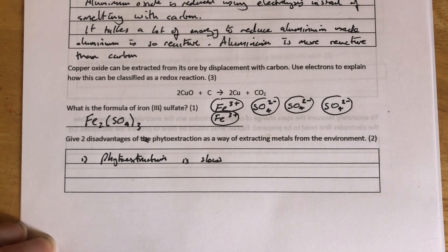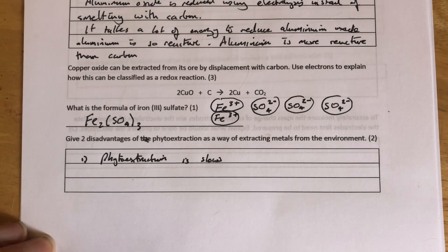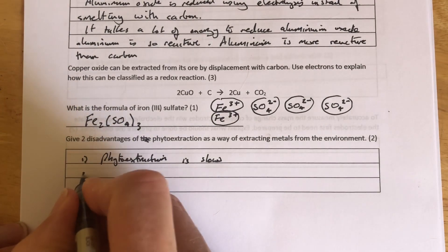So it's much quicker just to go to a quarry and dig the metal ore out of the ground and then extract it. You've got to wait for the plants to grow here, so phytoextraction is slow.